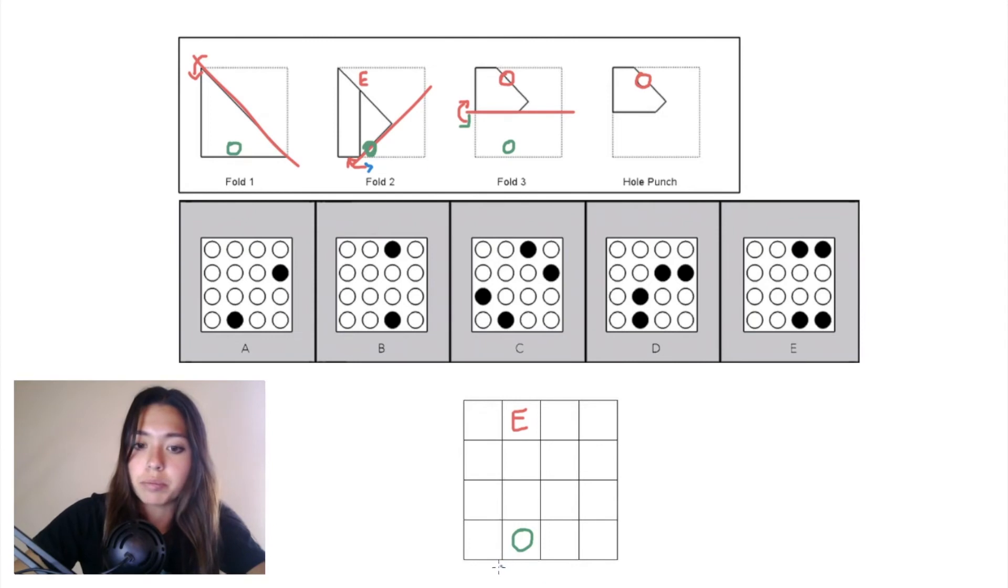If I drew that same plane in our grid, when we undo fold two we would just be filling in the other half of that hole punch, so we don't add any new hole punches in fold two.